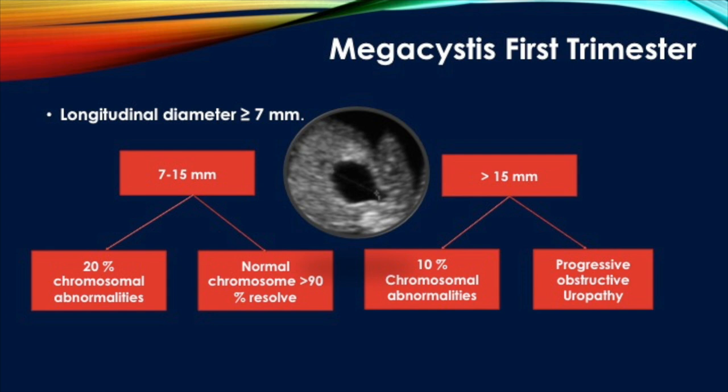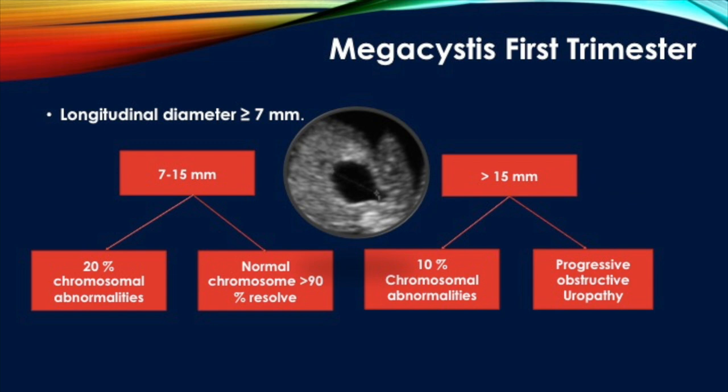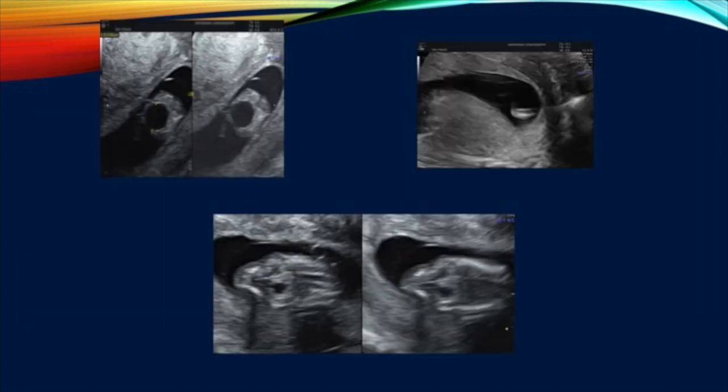In the chromosomally normal group of mild to moderate megacystis, more than 90% of cases resolve to normal. When the bladder diameter is more than 15 mm, it is a severe form of megacystis. In this group, hardly 10% are chromosomally abnormal, but in the chromosomally normal group, megacystis leads to progressive obstructive uropathy. Therefore, chromosomal evaluation is indicated in megacystis.